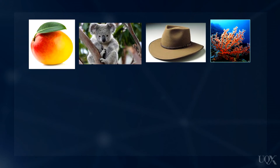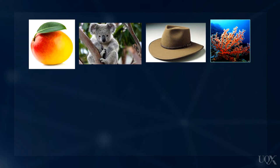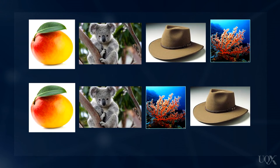For example, imagine you see a sequence of objects — say, a mango followed by a koala, followed by a hat, and then a coral. But the second time you see this sequence, you know that a hat will follow a koala. But if it doesn't, you'd be surprised.